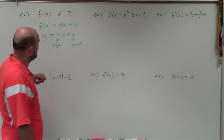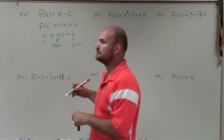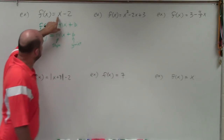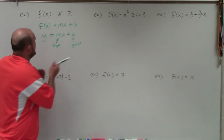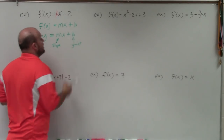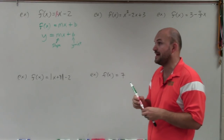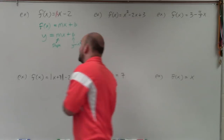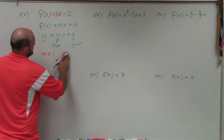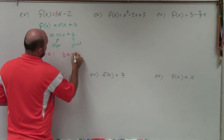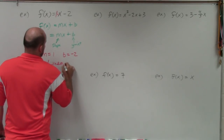Let's look at the first example. You can see in my first example I have x minus 2. A lot of you might say, where's our m? Well, remember, if we don't have a coefficient, we can always think of our coefficient as 1. So the coefficient is going to be our m. Basically, m equals 1 and b equals negative 2. It is in slope-intercept form, so we would write linear.